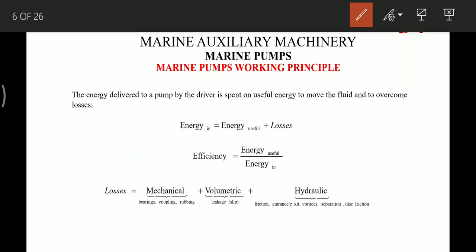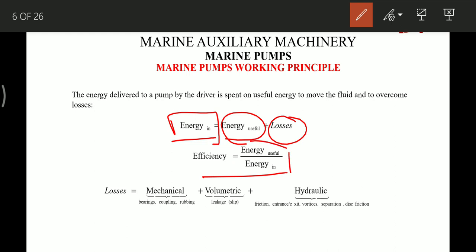The total energy supplied to the motor equals the energy used by the pump plus the energy used in overcoming losses. The efficiency of the pump system is the useful energy divided by the energy consumed by the motor. Losses are of three types: mechanical losses due to bearings, coupling, or rubbing; volumetric losses due to leakage; and hydraulic losses due to friction, vortex separation, or disc friction.